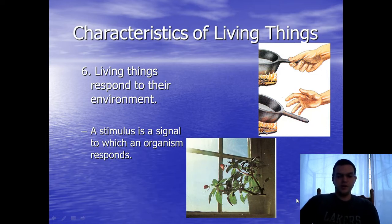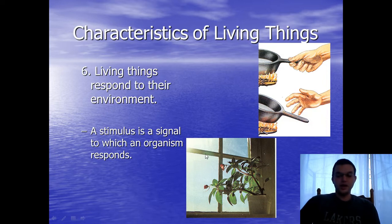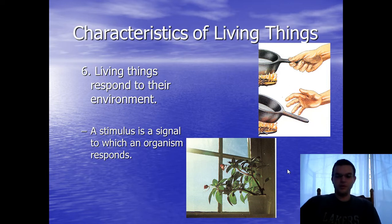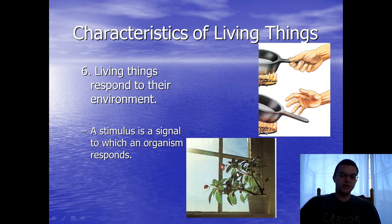Another example: a plant leans towards its source of sunlight. If you want something fun to try, take that pot and turn it 180 degrees so the plant is now facing away from the sun. Over the next couple of weeks, the plant will reposition itself and lean toward the sunlight again, because sunlight is the stimulus and getting closer to it is the response.